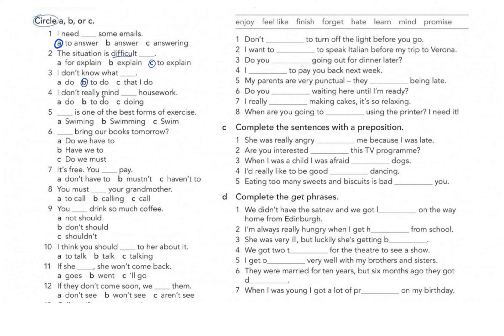Question four: 'I don't really mind...' After verbs like 'mind', 'love', 'hate', 'enjoy', 'avoid', 'deny', if you want to use another verb, that verb has to take the gerund (ing) form. So the answer is 'I don't really mind doing housework', because of the verb 'mind'.